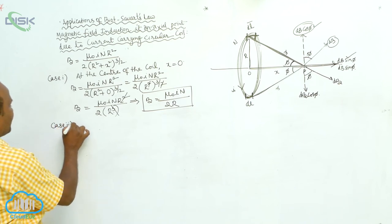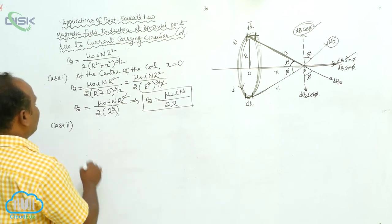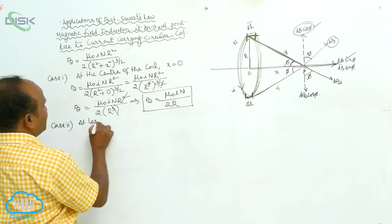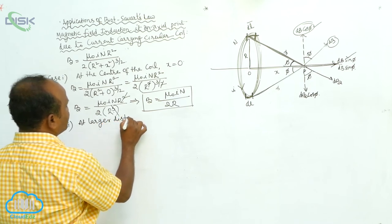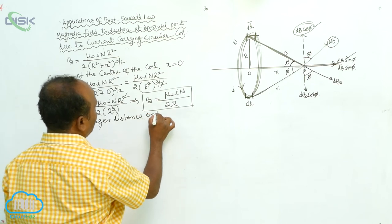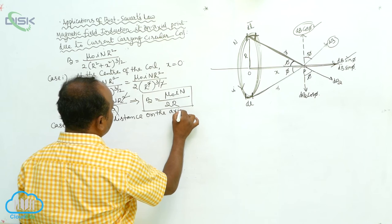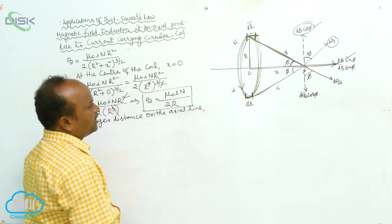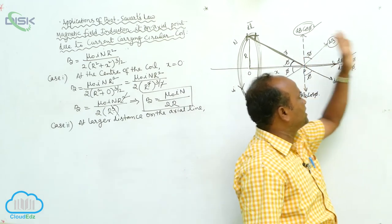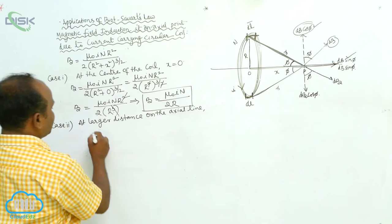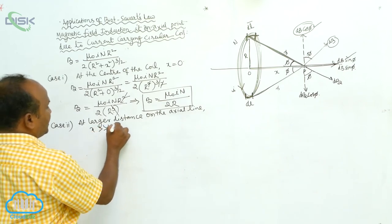Case 2: At larger distances on the axial line. We want to calculate the magnetic field at larger distances from the center along the axial line. In this case, x is much greater than the radius of the coil.